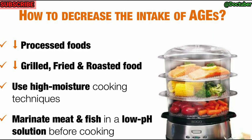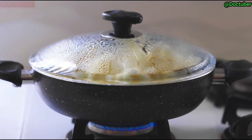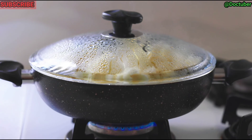We have seen how AGEs can cause the majority of our chronic disorders, so it is very important to decrease the intake of AGEs. We can do this by decreasing the consumption of processed foods, grilled, fried, and roasted foods. We should use high-moisture cooking techniques and marinate meat and fish in a low pH solution before cooking to reduce AGEs.